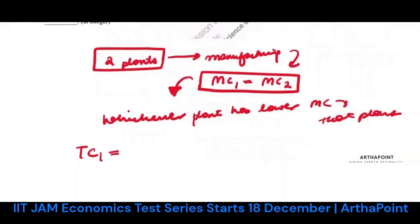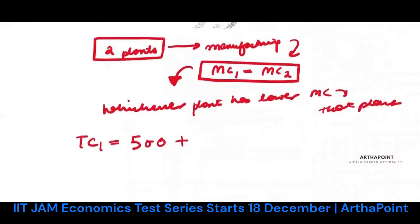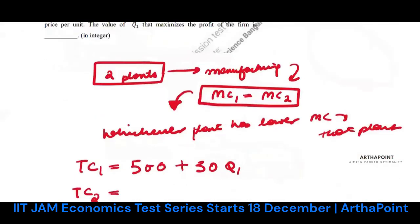If I look at the total cost of plant 1, that is 500 + 30Q1, and total cost of plant 2, that is 1500 + 20Q2.